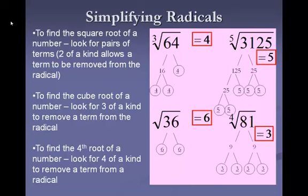I know that was really fast going through those with the factor trees, but for the most part, if it's going to be a perfect root — meaning it's going to give you a whole number answer — we're going to go ahead and just do these in our calculator. You can enter cube root of 64 by going to math, go down to number 4, you'll see cube root, type in 64, and hit enter. To do a fifth root, you would hit the number 5, then go to math, pick x-root, type in 3,125, and hit enter — it'll give you 5.